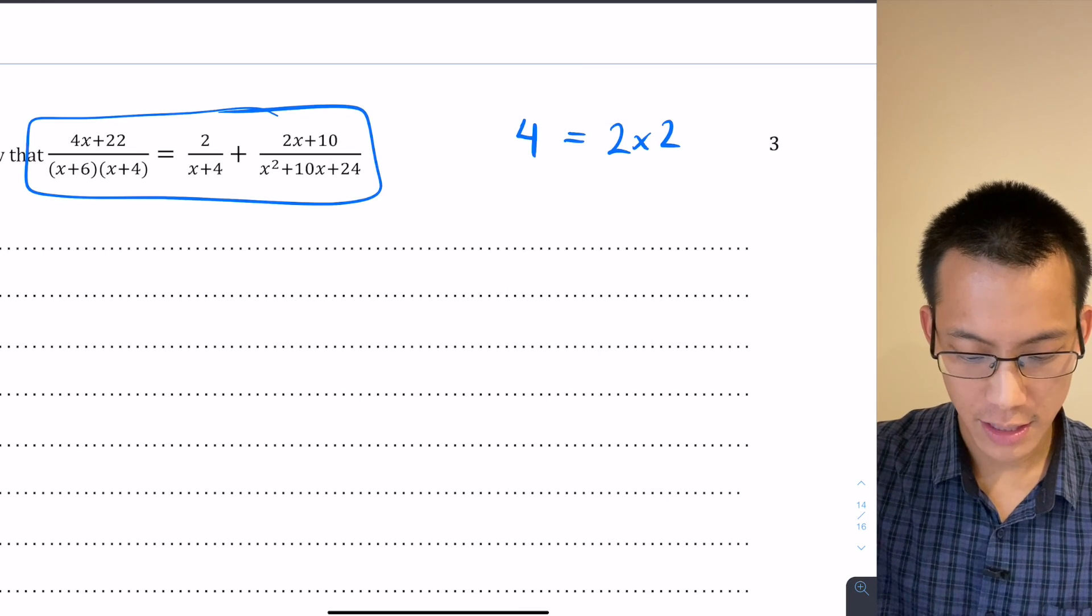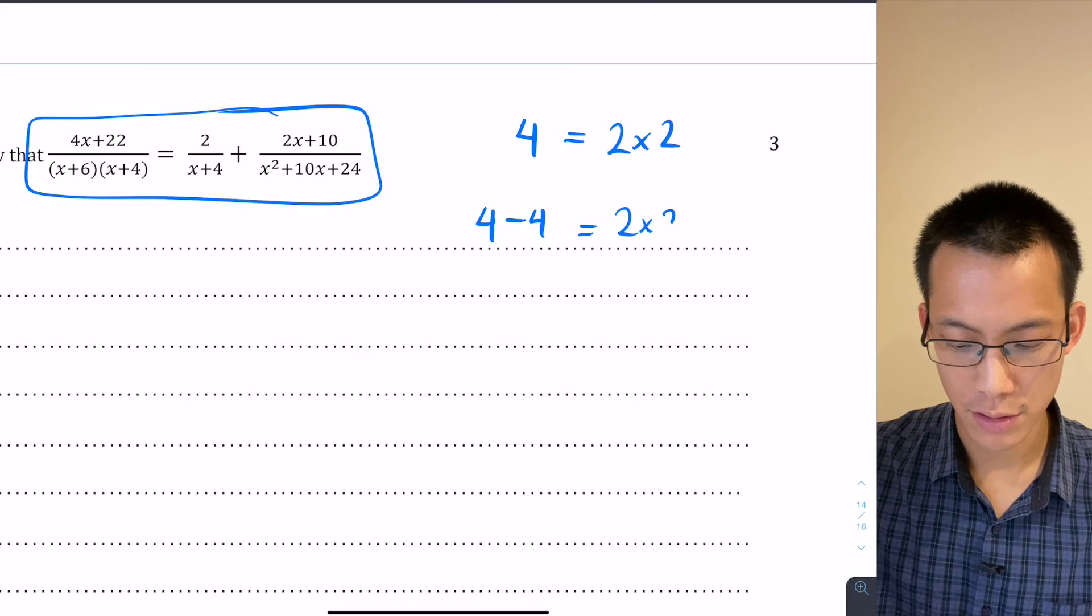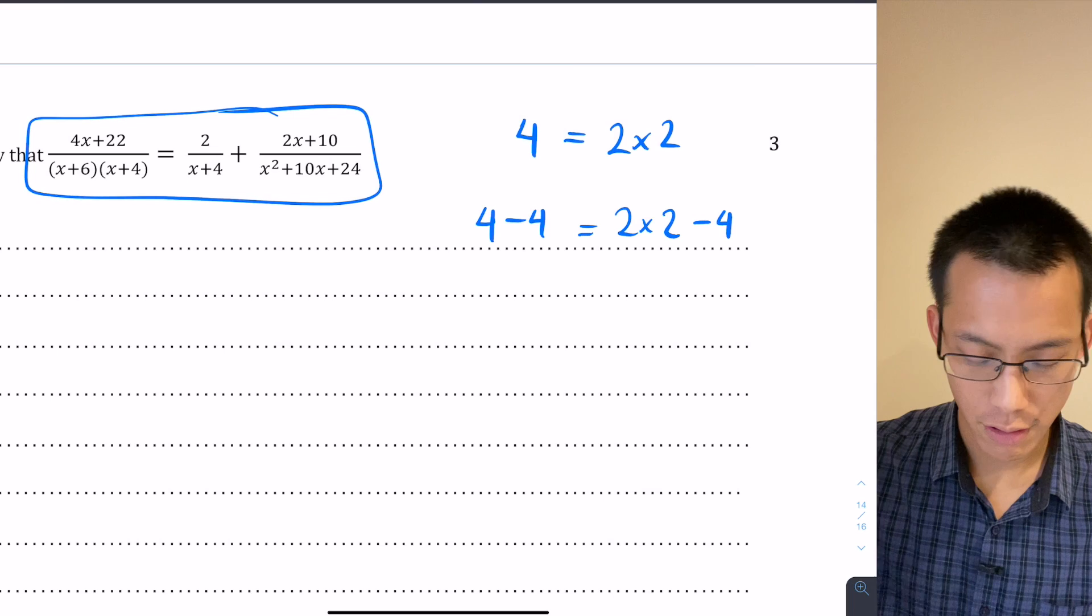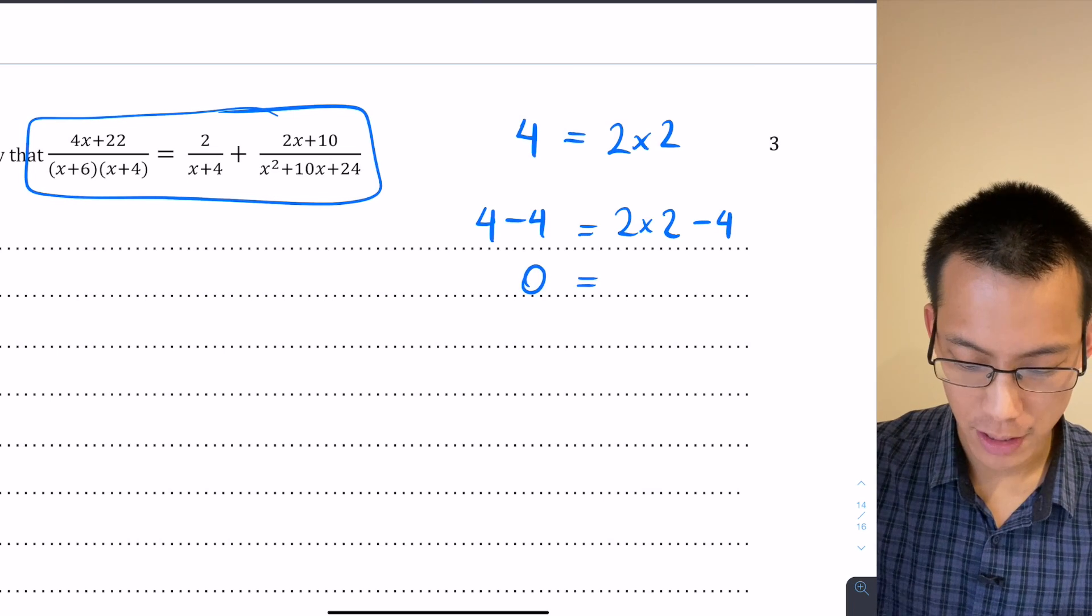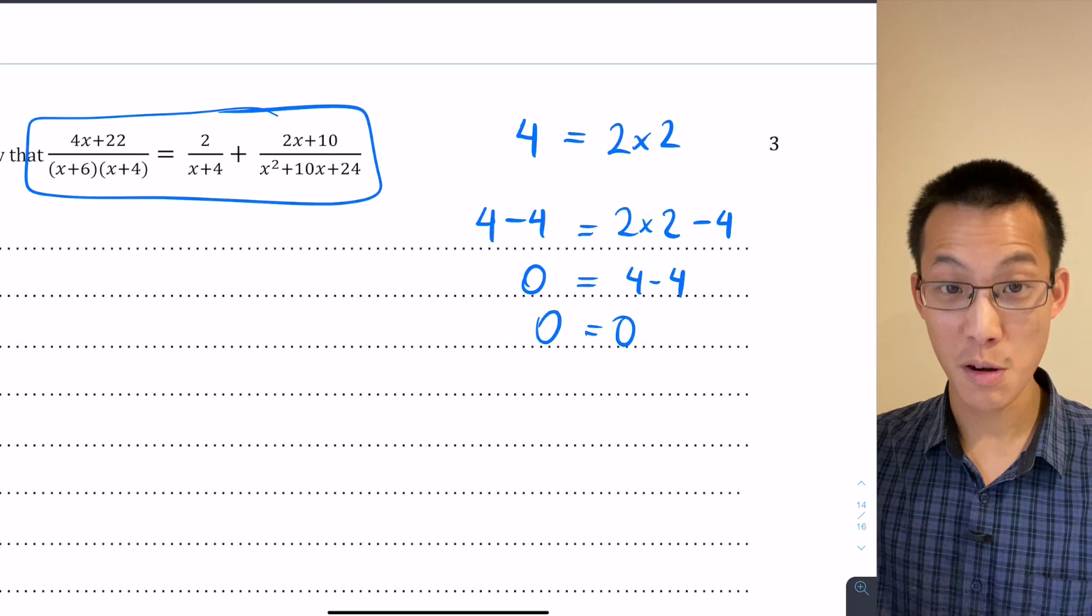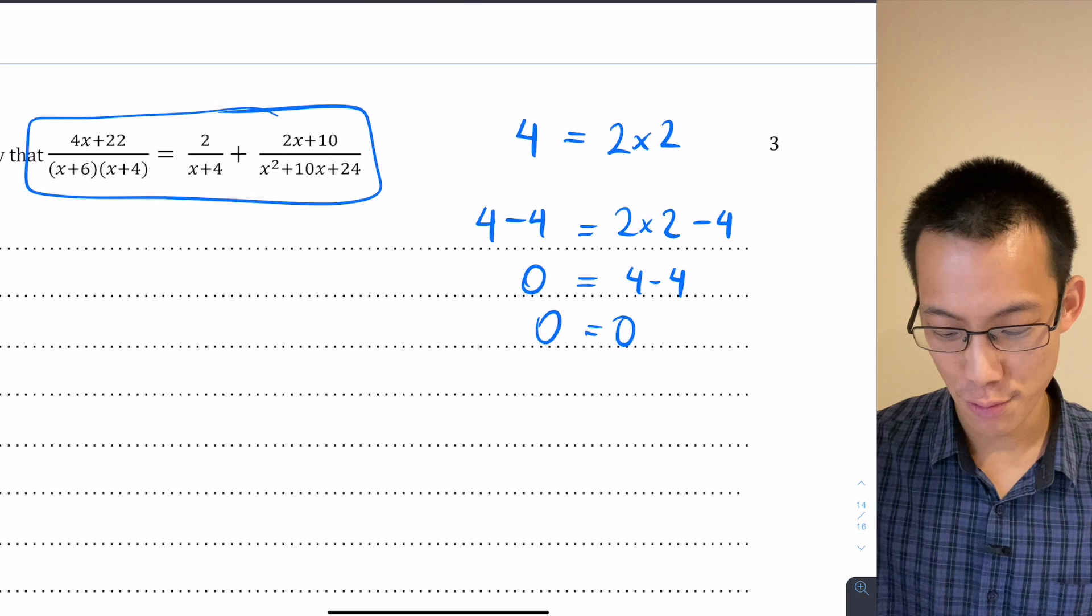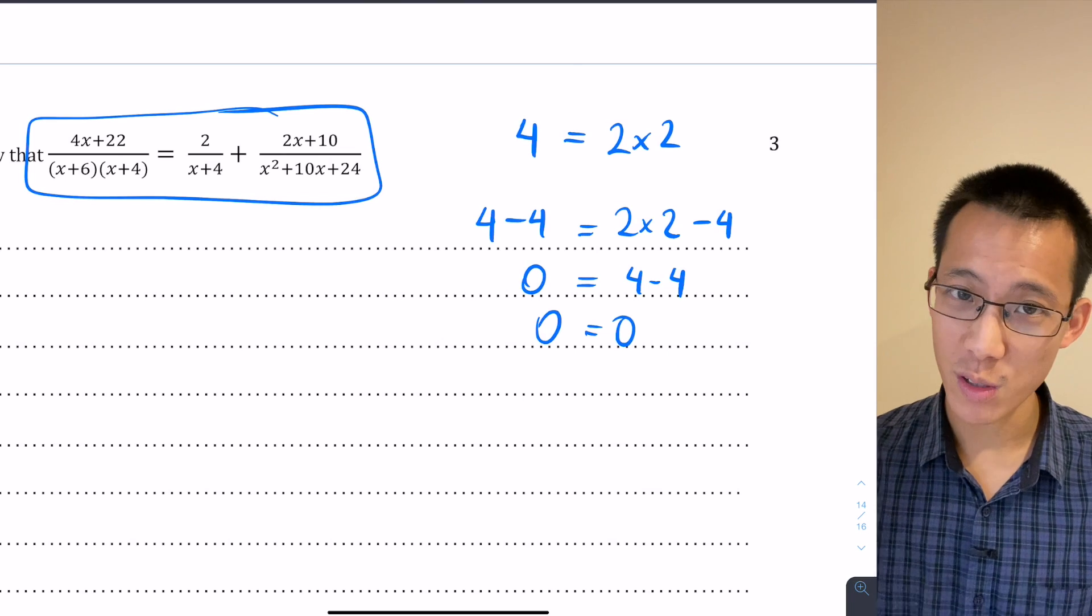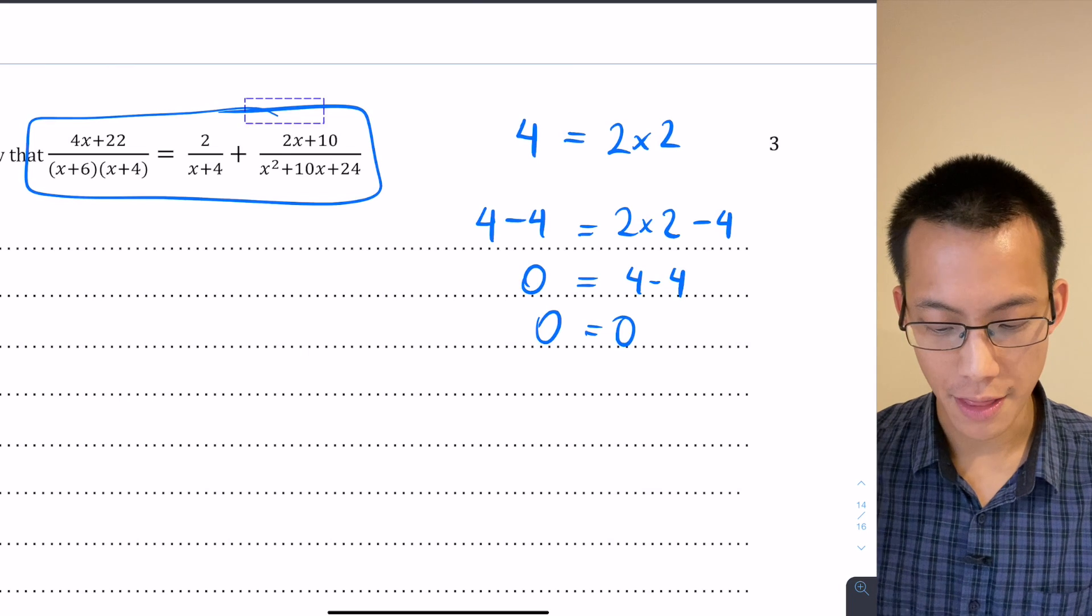That's 2 times 2 take away 4, 4 minus 4 on the left is 0, this is 4 minus 4 that's also 0, and I'm like oh 0 equals 0, that's great. But it doesn't actually prove anything. This doesn't constitute a proof. What you've got to do is start with one side and move to the other.